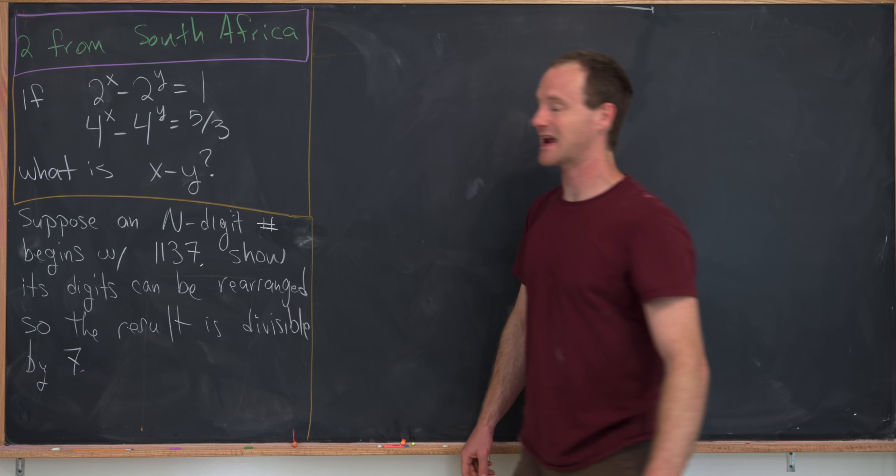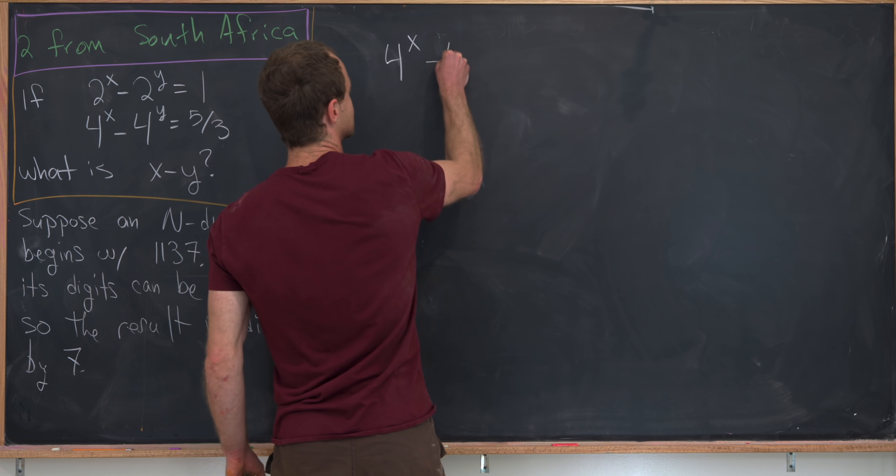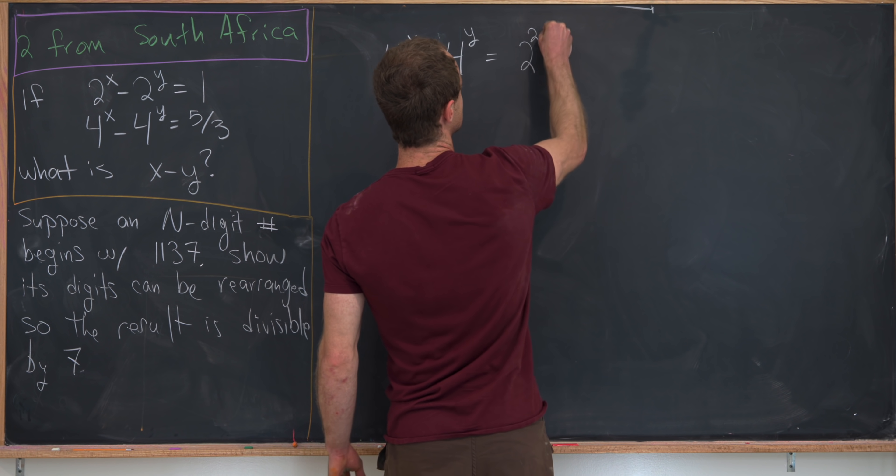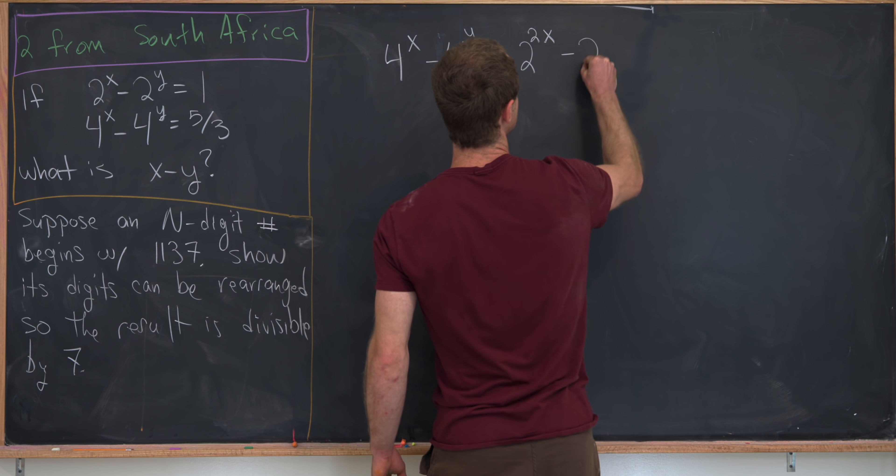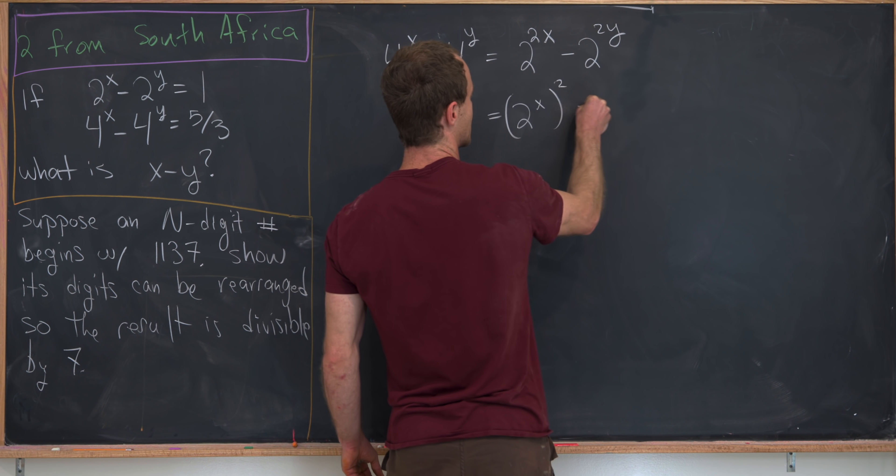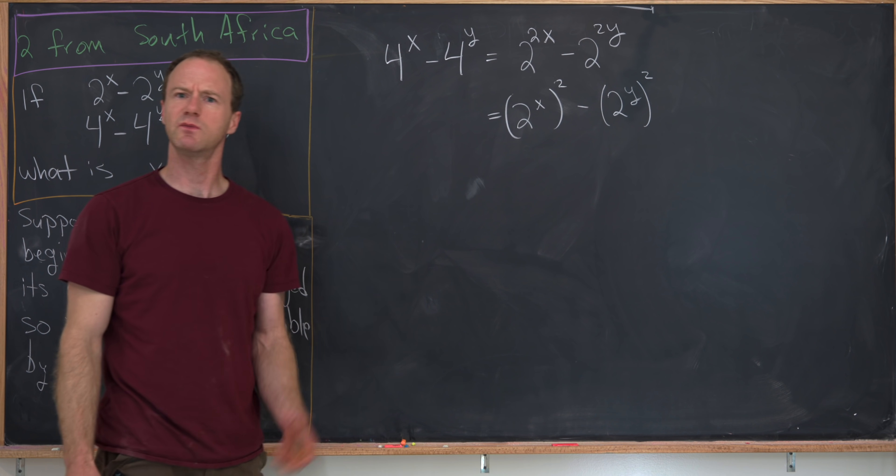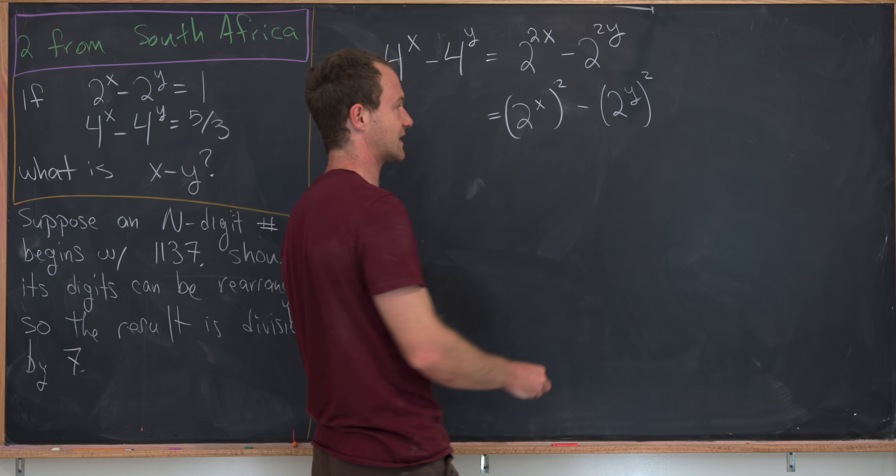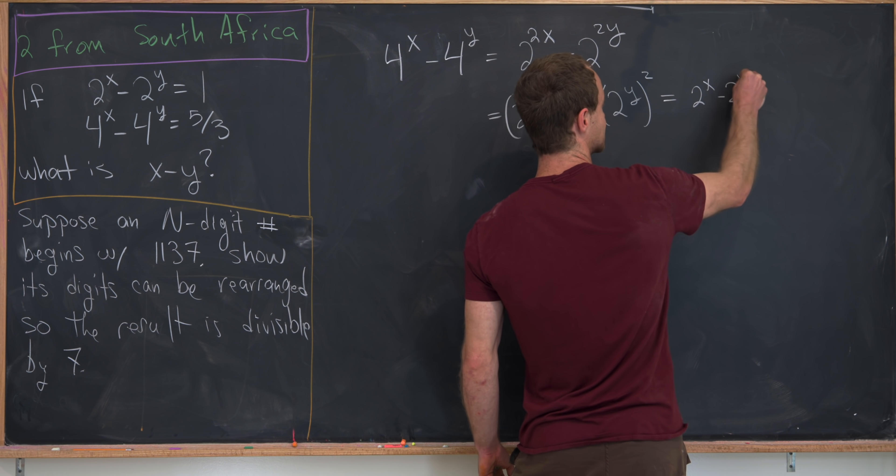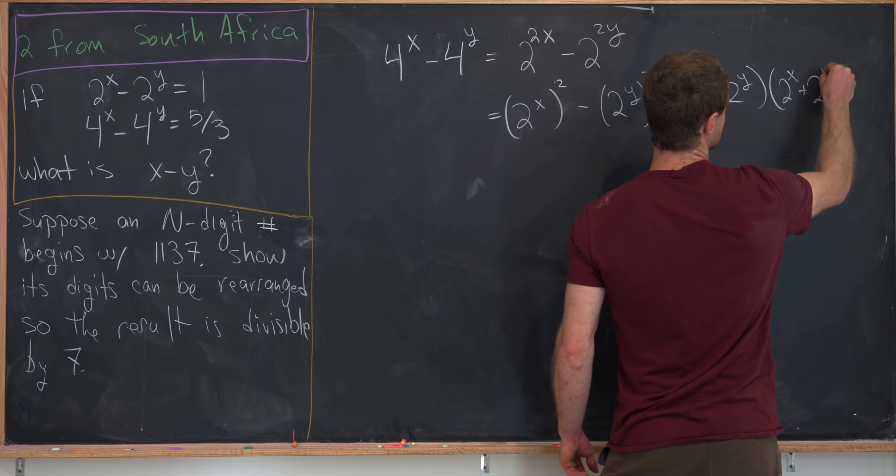So let's take this second equation and notice that it can be factored. We've got 4 to the x minus 4 to the y, which can be written as 2 to the 2x minus 2 to the 2y, which is the same thing as 2 to the x quantity squared minus 2 to the y quantity squared. But we can apply the difference of squares factorization formula to see that we get 2 to the x minus 2 to the y times 2 to the x plus 2 to the y.